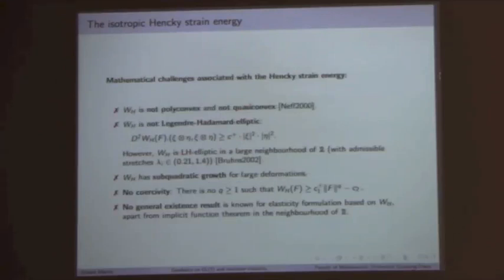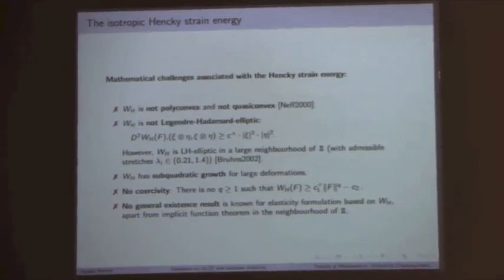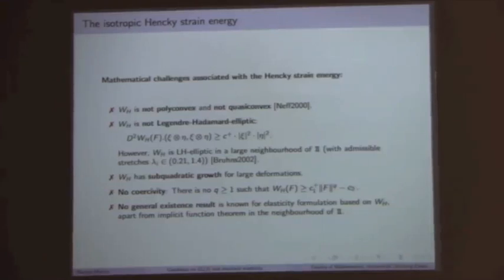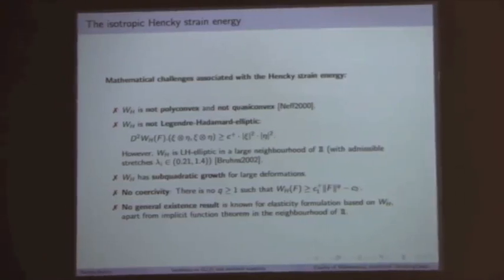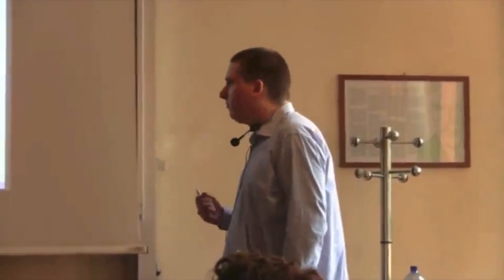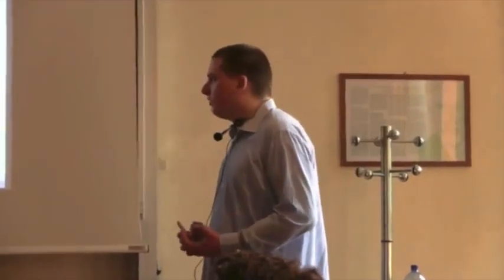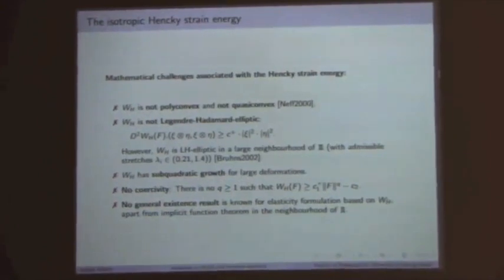There are also drawbacks, mostly of a mathematical nature. The Hencky energy is not polyconvex and not quasiconvex, as shown by Professor Neff in his PhD thesis. It is not even Legendre-Hadamard elliptic, which is a necessary condition for those convexity properties. Furthermore, it has only sub-quadratic growth for large deformations, and there is no Q-coercivity whatsoever. Since essentially all existence results for energy minimizers are based on convexity and coercivity, there are no strong existence results known for the Hencky energy.